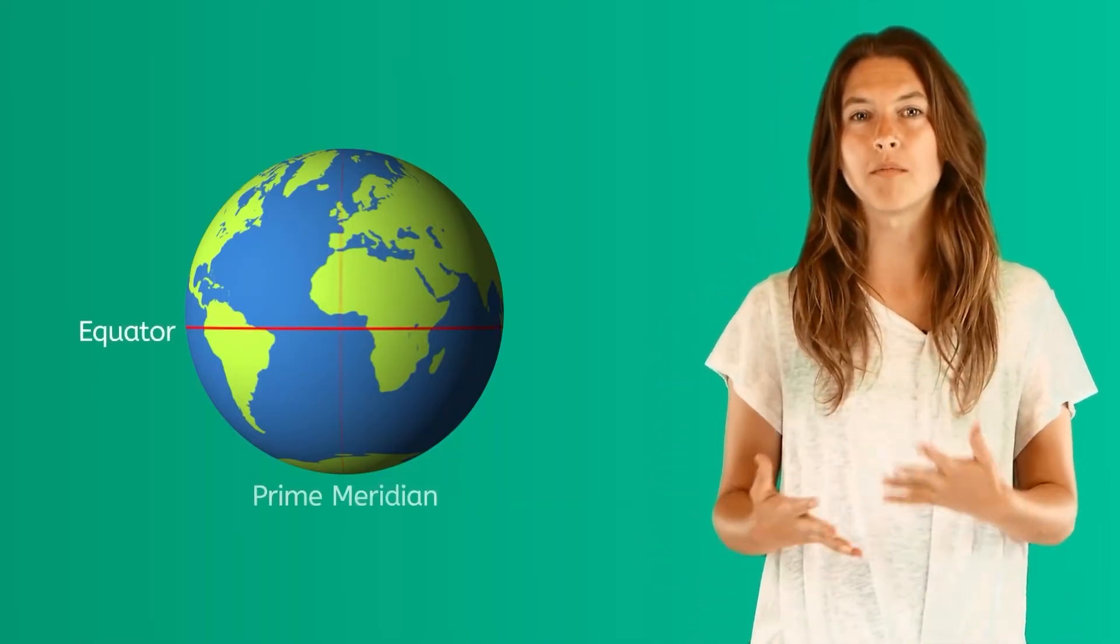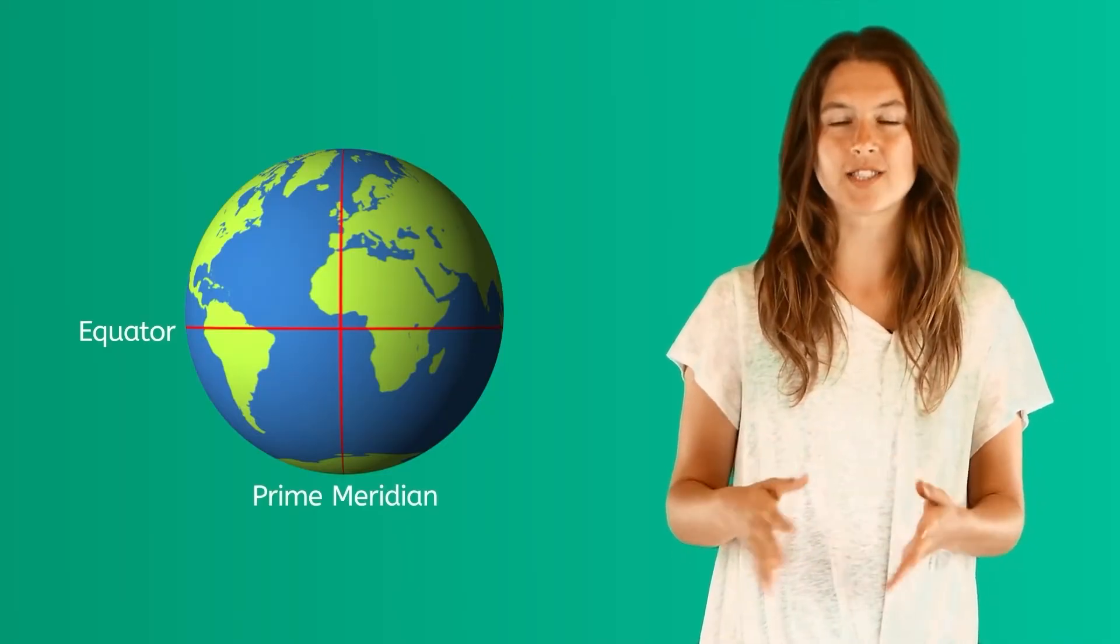Hemisphere lines might be invisible on Earth, but they are actually drawn on maps. Now, the equator and the Prime Meridian aren't just randomly placed around the Earth.